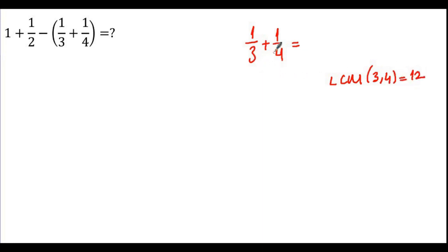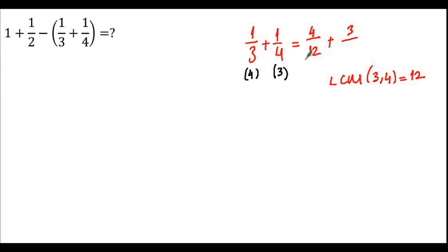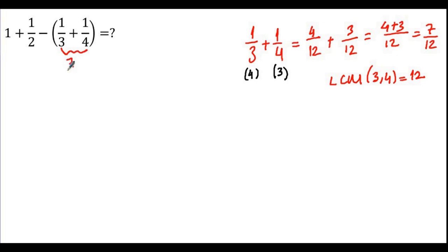So I have to make the denominators 12. I multiply 3 by 4 to get 12, and 4 by 3 to get 12. So I multiply the numerators and denominators accordingly: 4 times 1 is 4 over 12, and 3 times 1 is 3 over 12. Now we have the same denominators, so we can add the numerators: 4 plus 3 over 12 equals 7/12. So this bracket equals 7/12. Now we are done with the bracket.